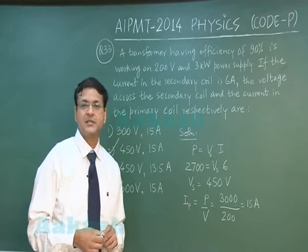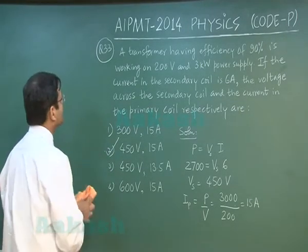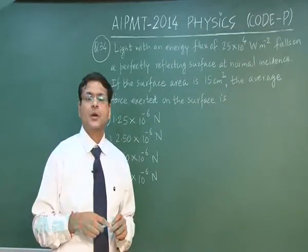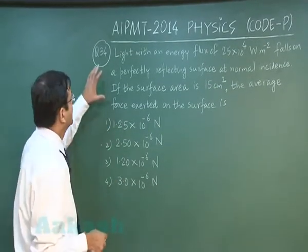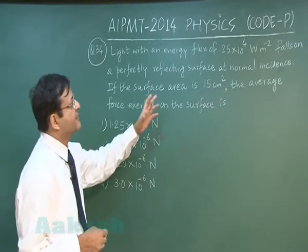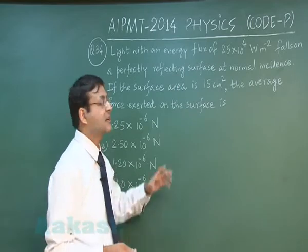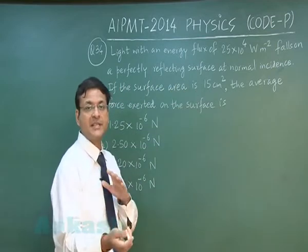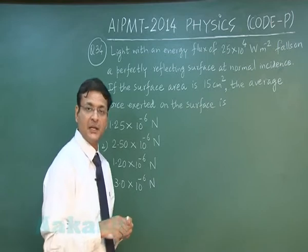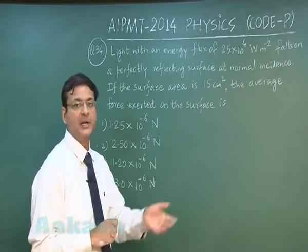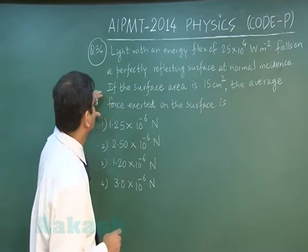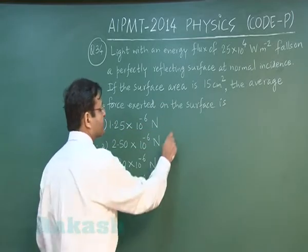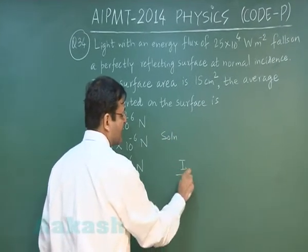Now let us discuss the next question that is question 34. In the next question that is question 34, it is light with an energy flux of 25×10⁴ watt per meter square. You can also understand this is the intensity of the light which has been given to you. It falls on a perfectly reflecting surface. Of course the intensity will be coming back if you treat that light is consisting of photons. So naturally it will be exerting pressure and ultimately force on the reflecting surface. If the surface area is 15 centimeter square, then the average force exerted on the surface is, this is the question.